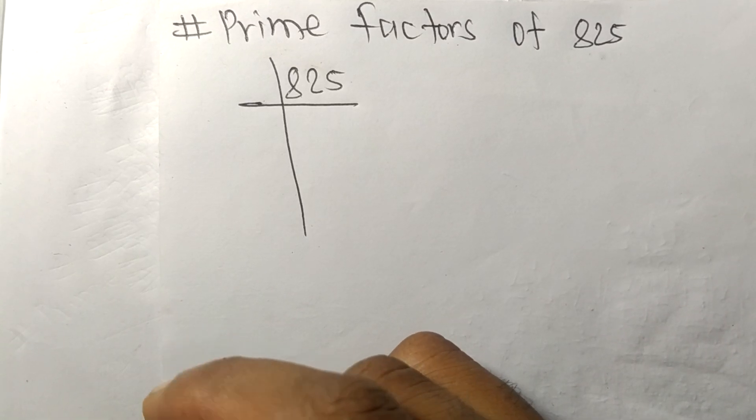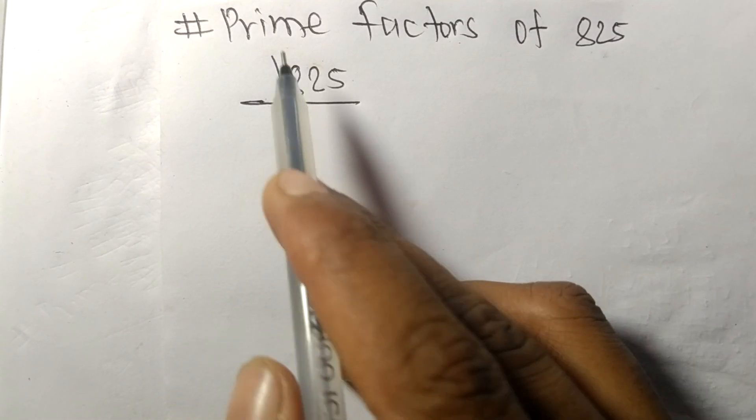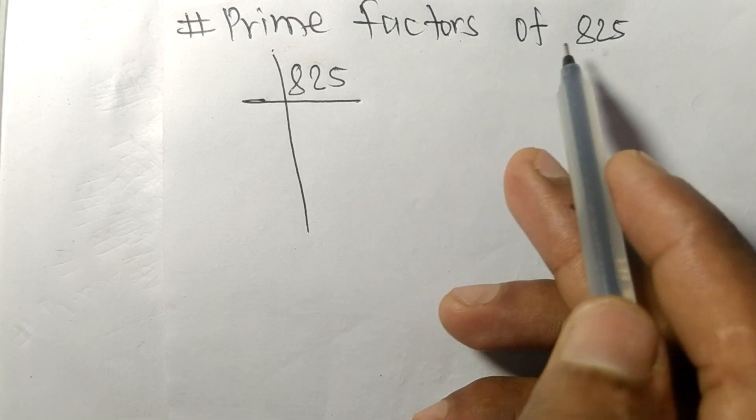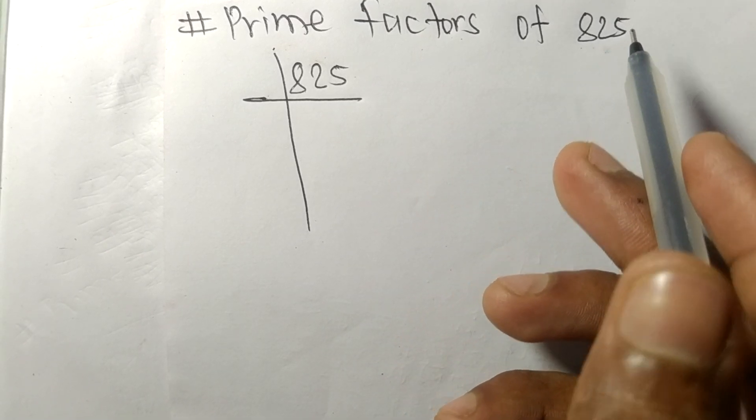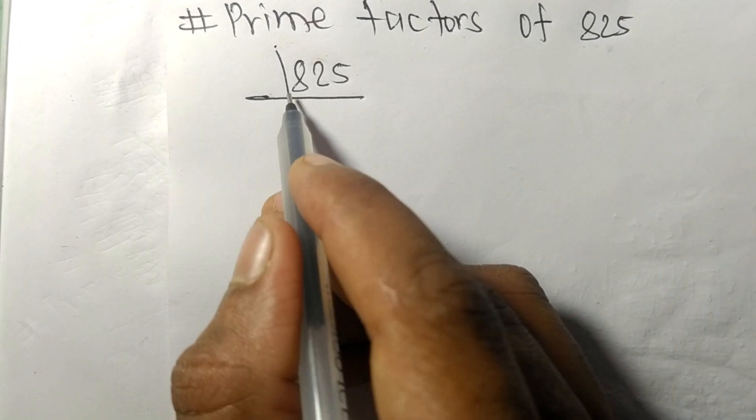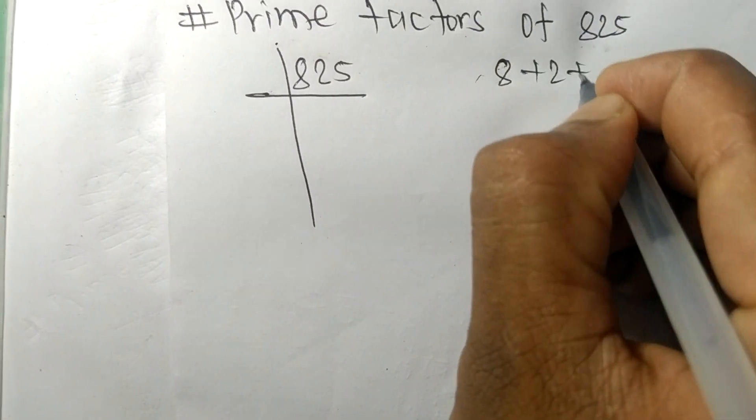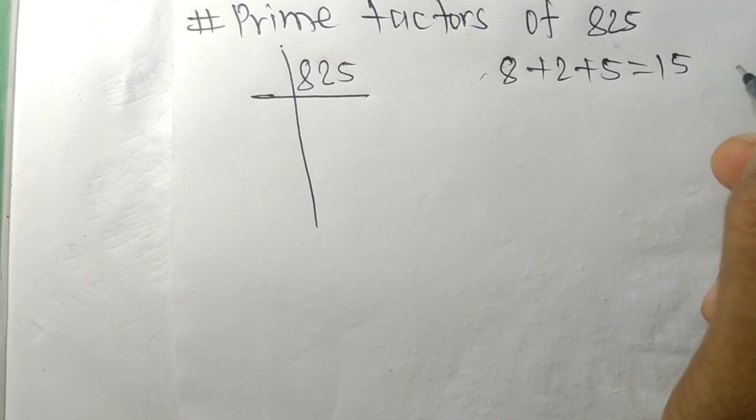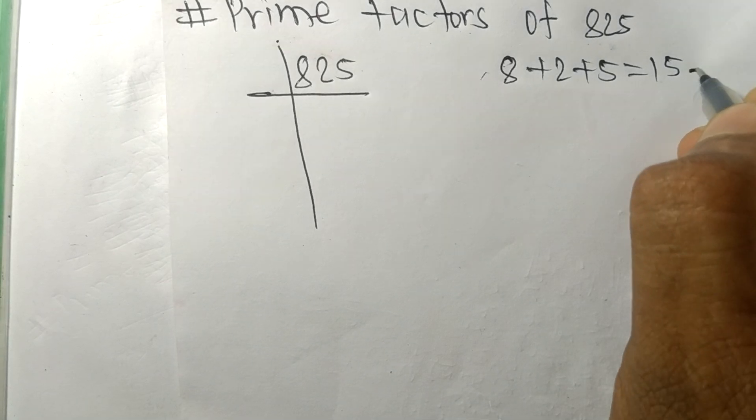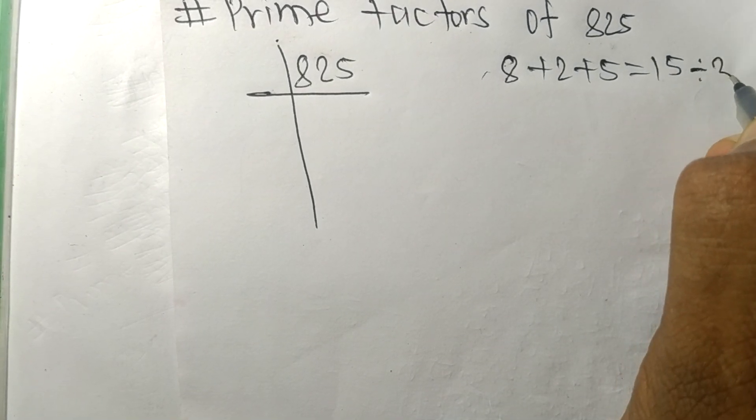Today in this video we shall learn to find the prime factors of 825. When we add all these numbers, 8 plus 2 plus 5, we get 15, and 15 is exactly divisible by 3.